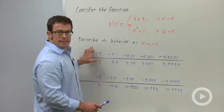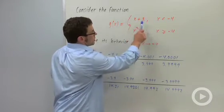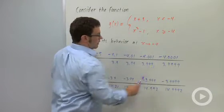When x is less than negative 4, we're using this piece of the function. So we're getting closer and closer to the value 4.